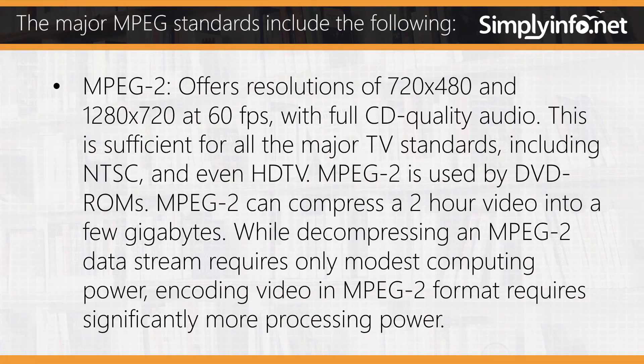MPEG-2 offers resolutions of 720x480 and 1280x720 at 60fps with full CD quality audio. This is sufficient for all major TV standards including NTSC and even HDTV. MPEG-2 is used by DVD ROMs and can compress a 2-hour video into a few gigabytes.